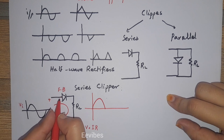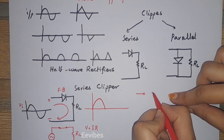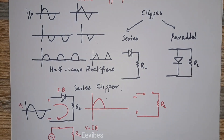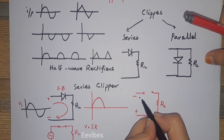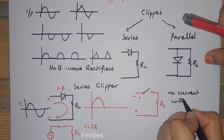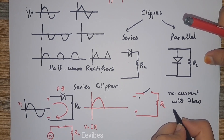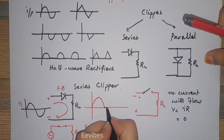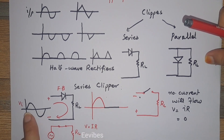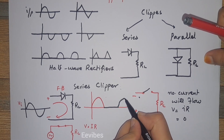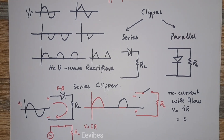When the negative cycle of the input voltage arrives, the diode will be reverse biased and you can replace it with an open circuit. Since there is no path for current to flow, no current will flow, and hence there will be no voltage according to Ohm's Law. The voltage across the load resistor will be equal to zero. Again, when the positive cycle arrives, this diode will be forward biased and conduction will resume, giving you the resulting output voltage waveform.